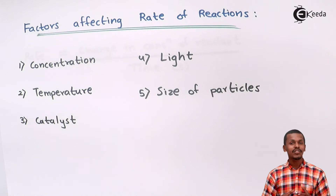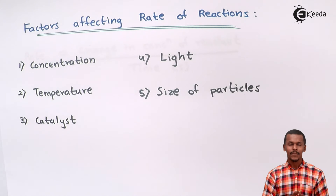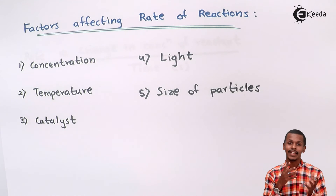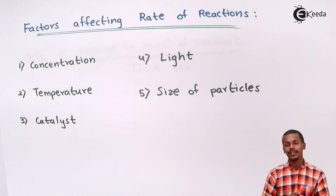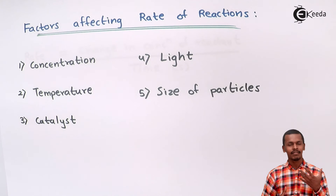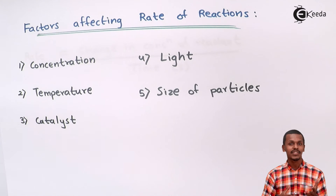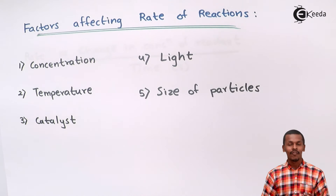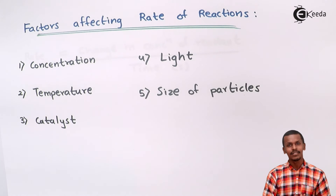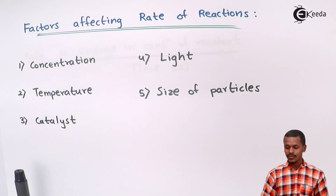Temperature also plays a very keen role in increasing the rate of reaction. If we heat a particular chemical mixture, according to the collision theory, the molecules will collide with each other with good orientation, which will increase the rate of reaction. Temperature is directly proportional to the rate of reaction most of the time, and when temperature is low, the rate of reaction goes on decreasing.